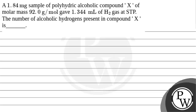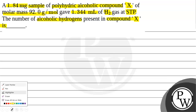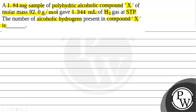Hello bachos, so let's read this question. A 1.84 milligram sample of polyhydric alcoholic compound X of molar mass 92 grams per mole gave 1.344 ml of H2 gas at STP. The number of alcoholic hydrogens present in compound X is. So, humeh batane hai alcoholic hydrogens kitne hai compound X mein.